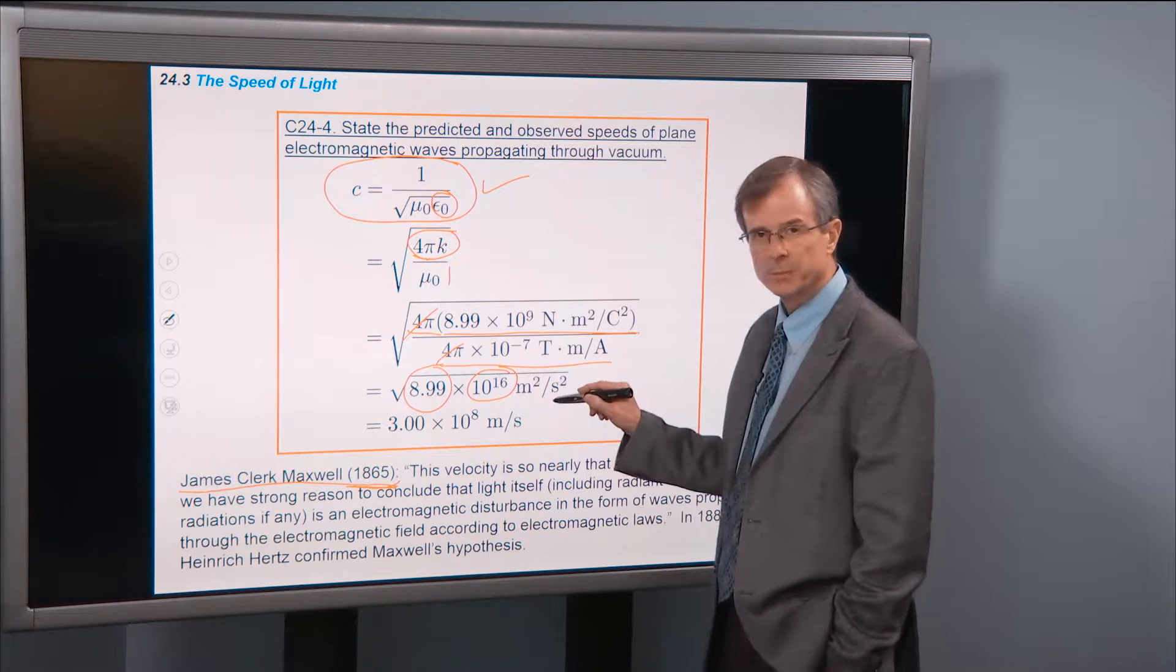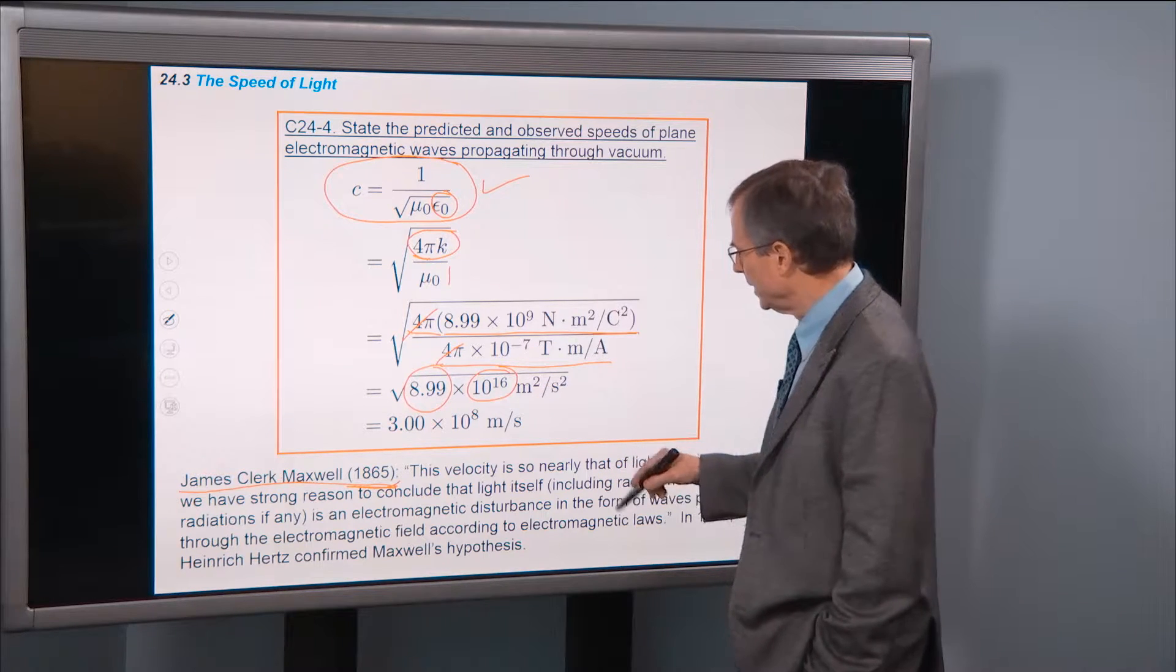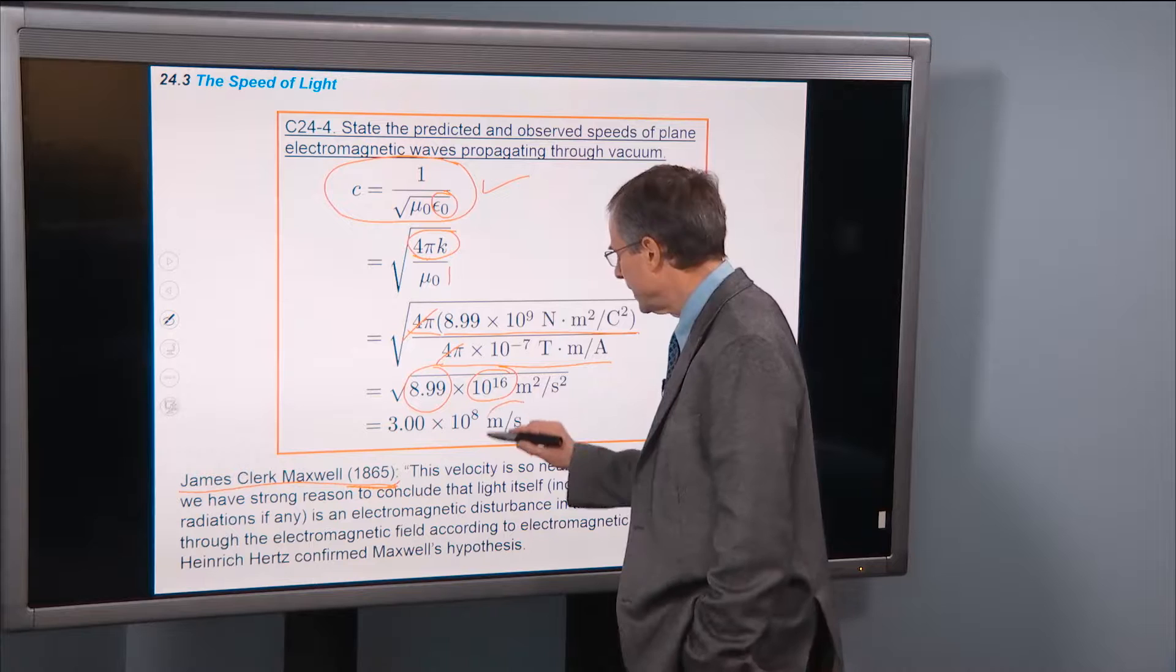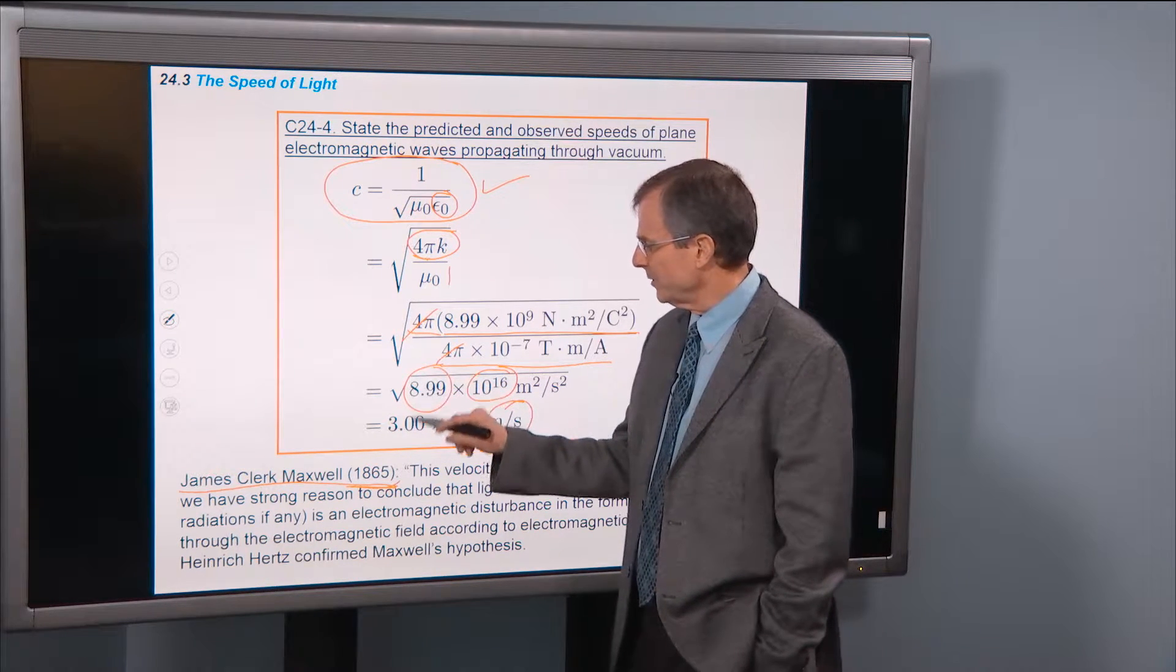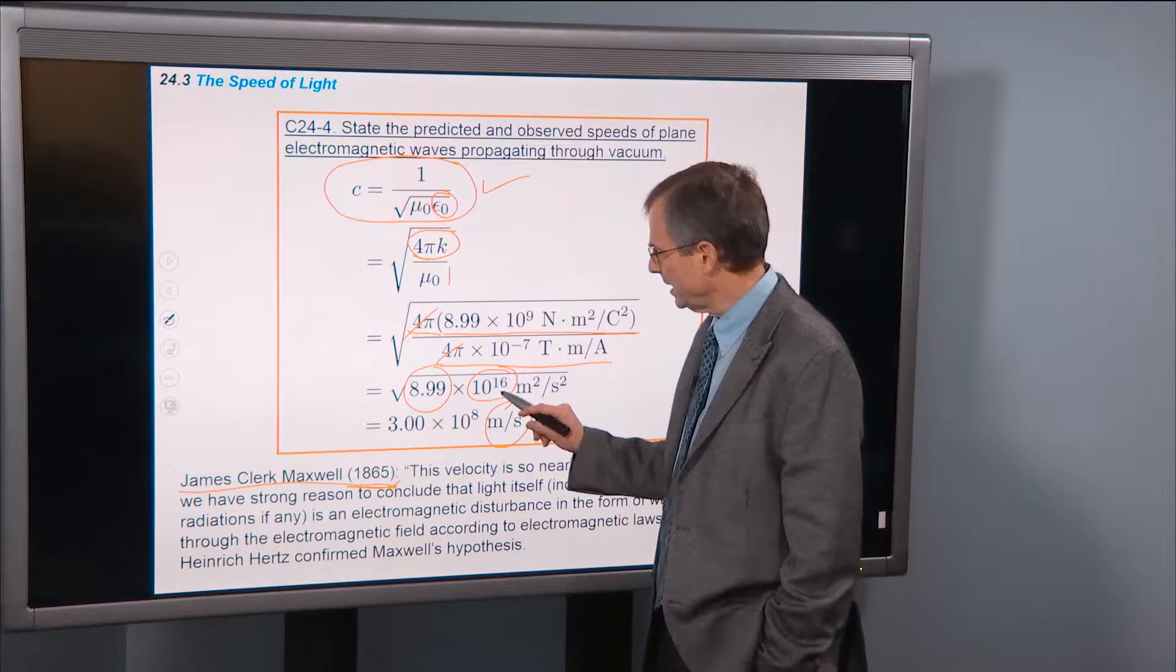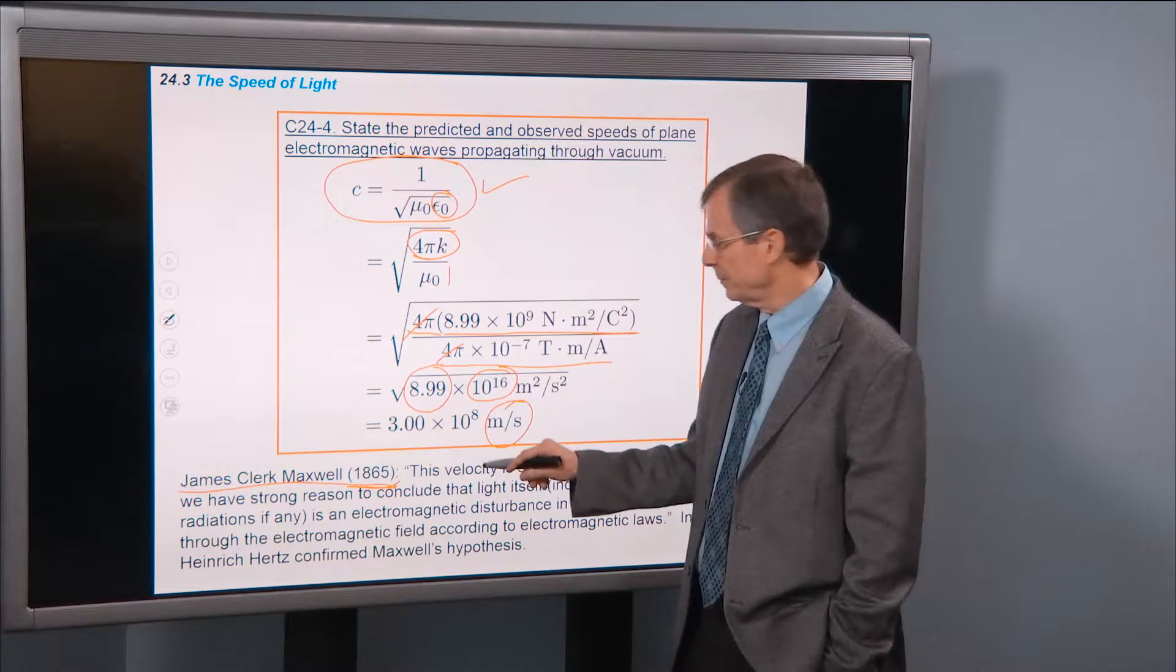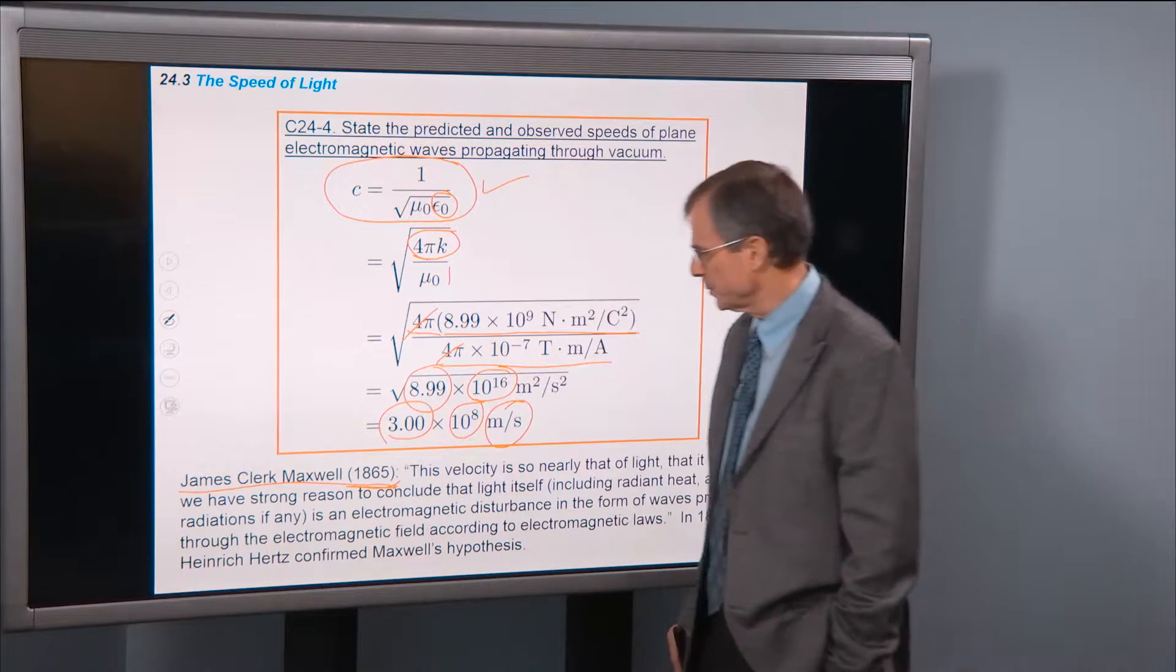And the units, if you put all these units together, you end up with meters squared per second squared under the square root. So when you take the square root of meters squared per second squared, you're going to get meters per second. When you take the square root of a number that's around 9, you get a number that's around 3. And you take the square root of 10 to the 16, that's 10 to the 16 raised to the 1 half power, that'll be 10 to the 8. So it's 3 times 10 to the 8 meters per second.